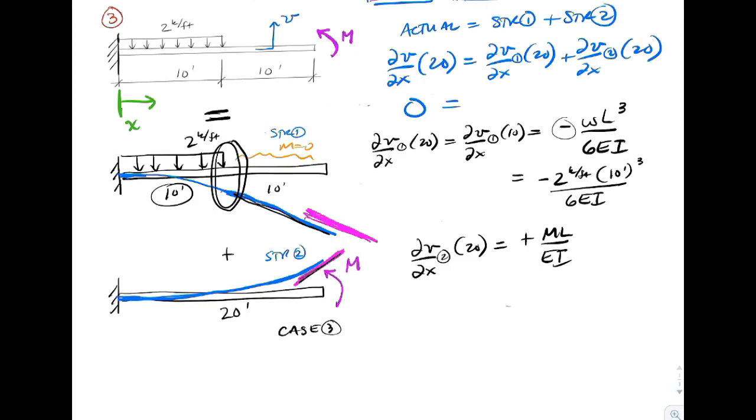So the derivative or the slope at 20 is going to equal plus ML over EI. And so we plug in what we know. That's going to be plus M times 20 feet, dealing with a beam that's 20 feet long, and really it's 20 feet from the wall to where the applied moment is, over EI.